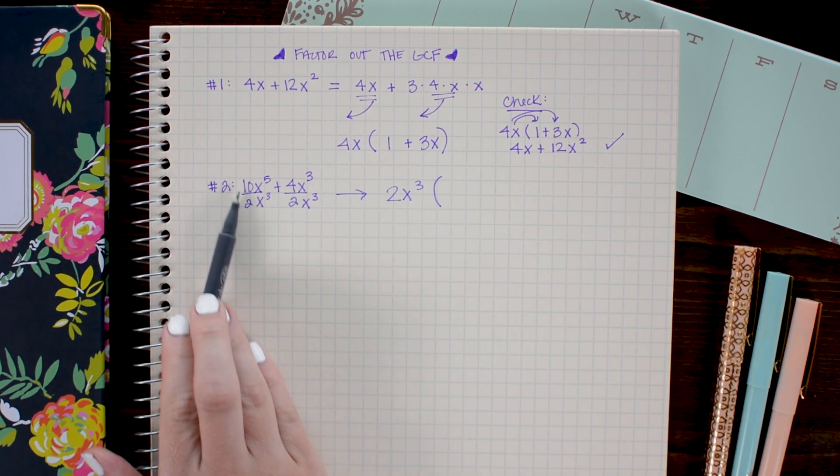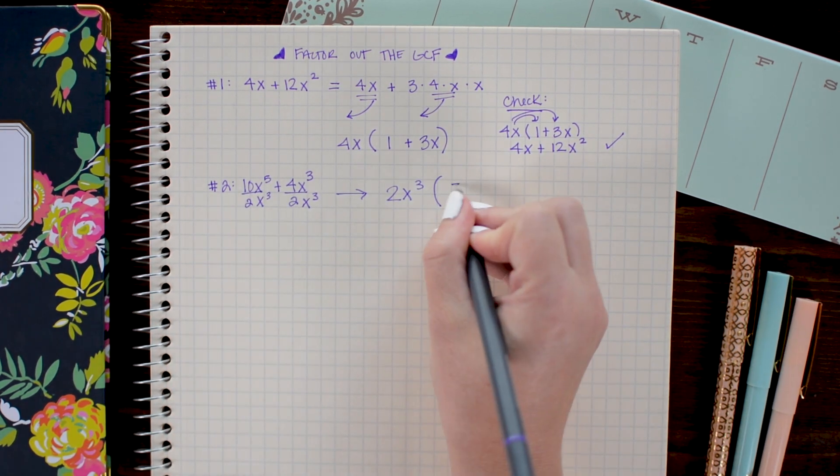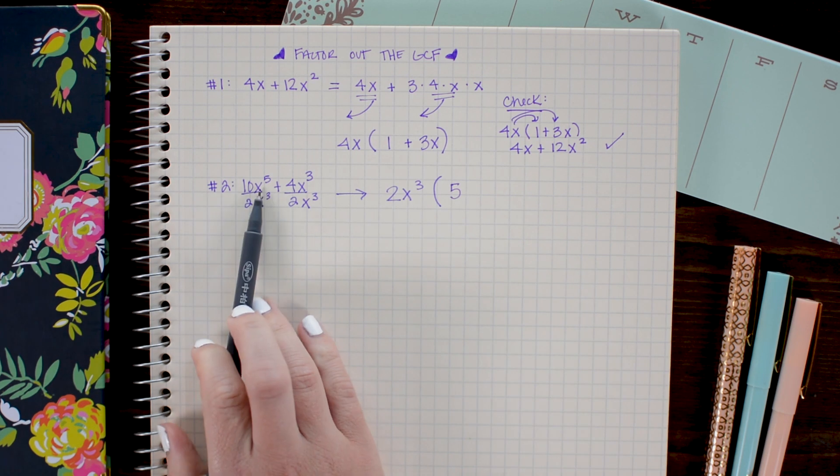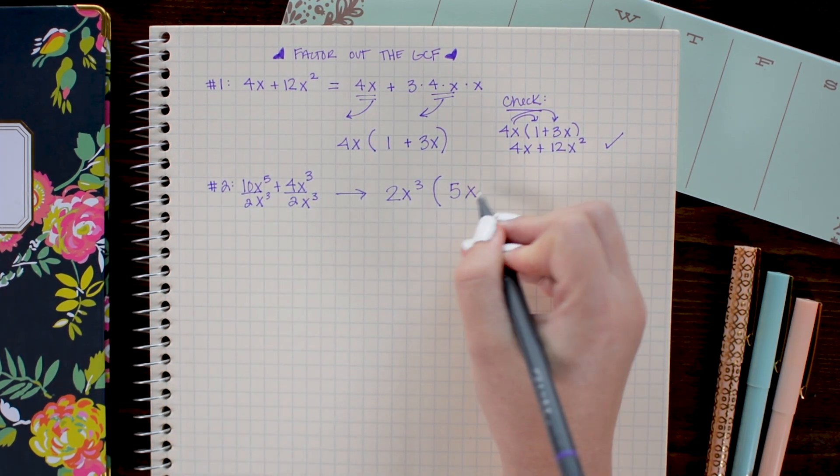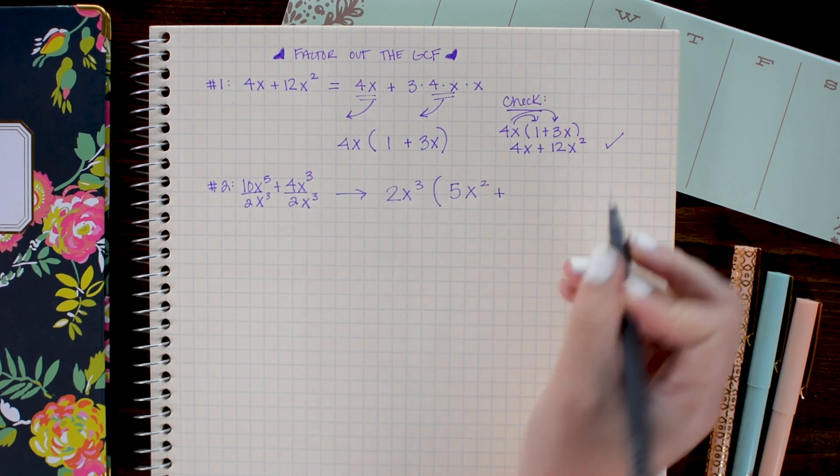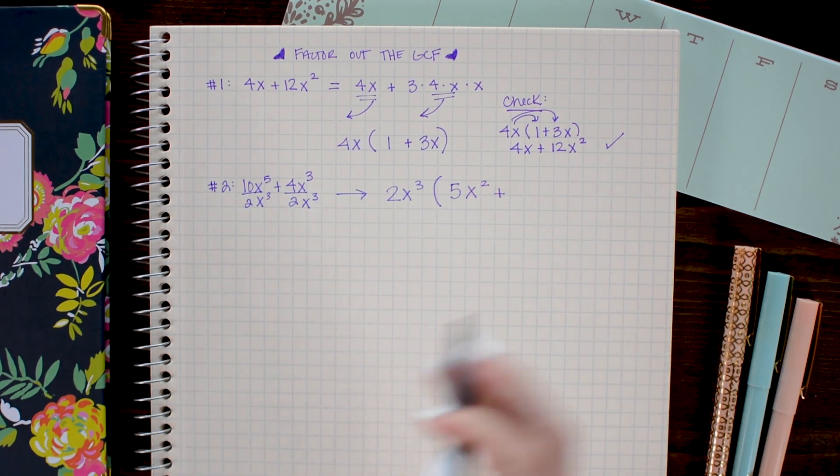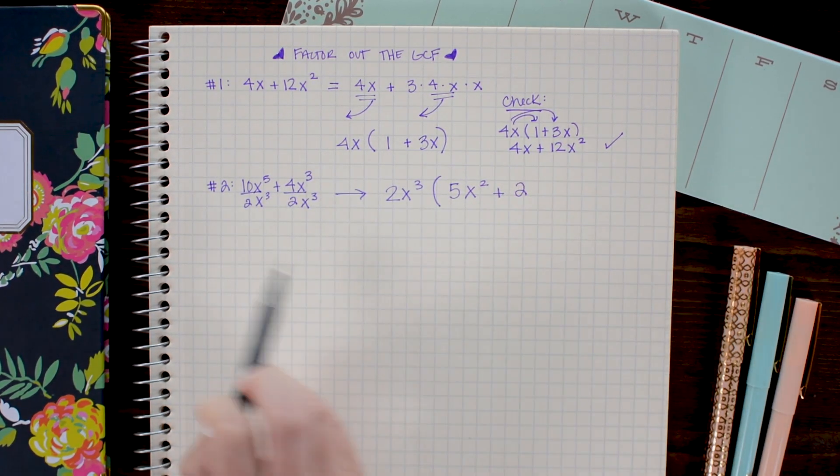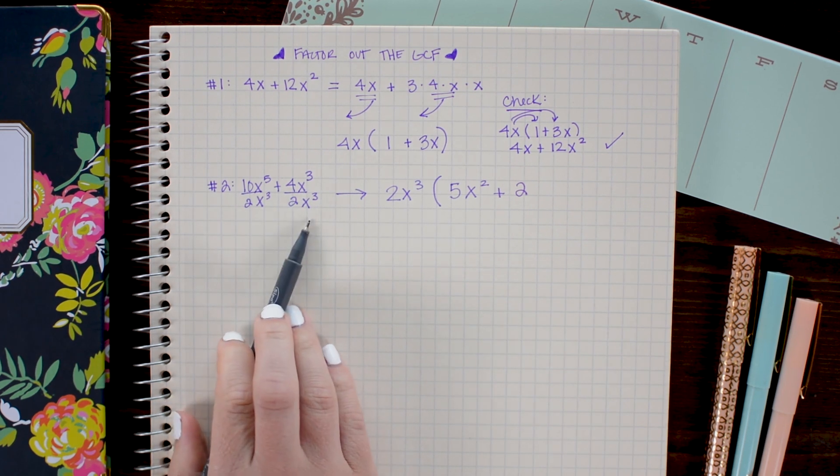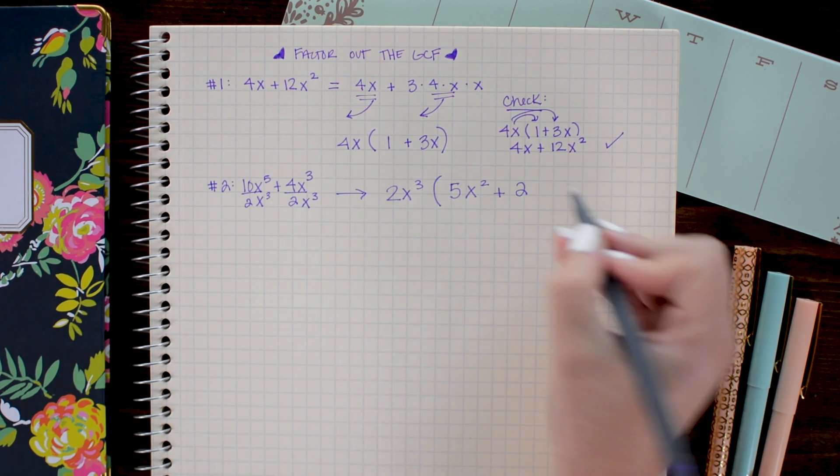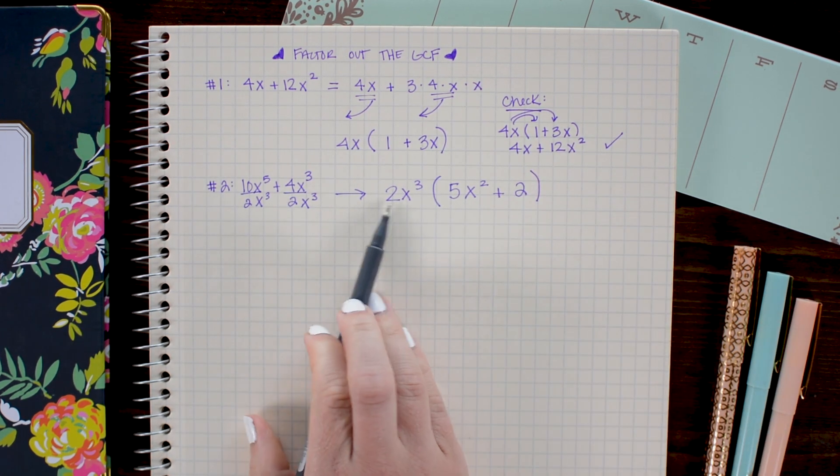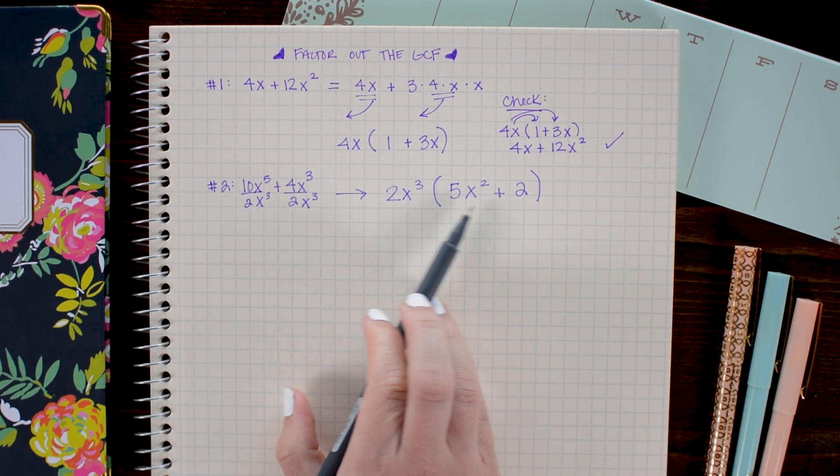The answer to the divisions I have here will be what is left behind to go inside of our parentheses. So 10 divided by 2 is 5, x to the fifth divided by x cubed gives me x squared, 4 divided by 2 is 2, and x cubed divided by x cubed is 1, so I don't need to write anything for those.